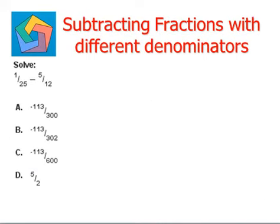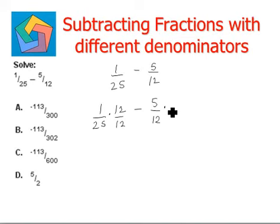Let's look at the next question. Solve 1 25th minus 5 12ths. Now here, by now we are very clear, the first fraction multiplied and divided by the denominator of the second fraction, minus the second fraction as it is, multiplied and divided by the denominator of the first fraction.